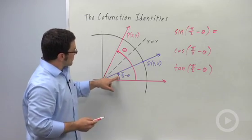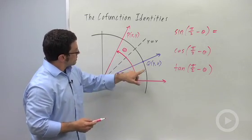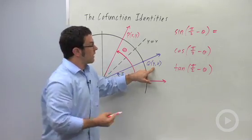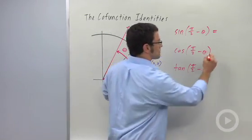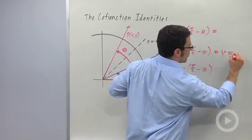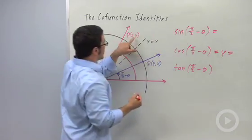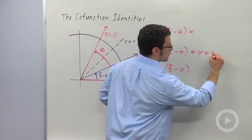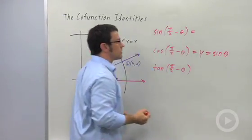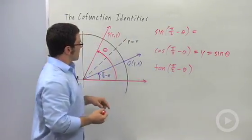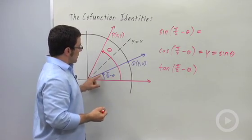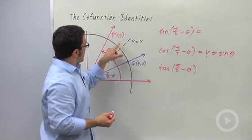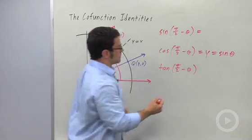That means the cosine of pi over 2 minus theta is going to be y, and y is the sine of theta. Similarly, the sine of pi over 2 minus theta is x, and x is the cosine of theta.